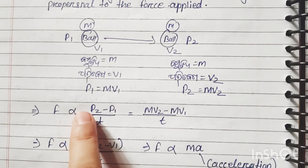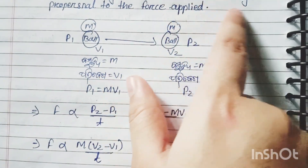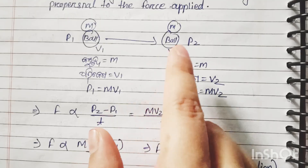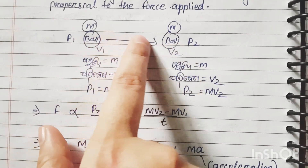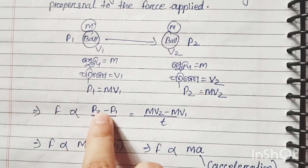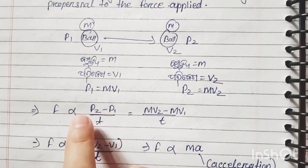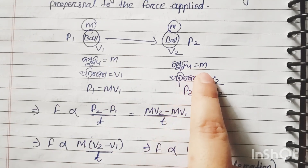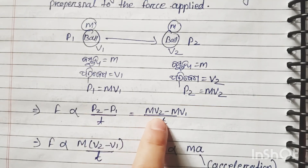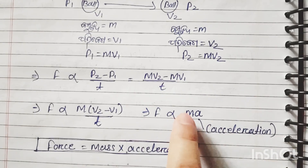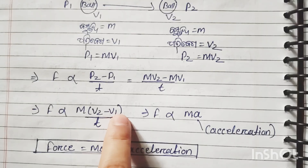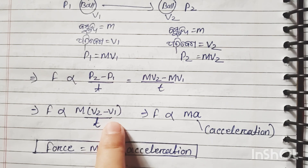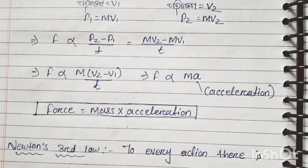Force is directly proportional to the rate of change in momentum. The change in momentum is p2 minus p1. So: (m·v2 − m·v1) divided by time. Taking m common: m(v2 − v1)/t. Since (v2 − v1)/t is acceleration, force equals mass into acceleration: F = ma.